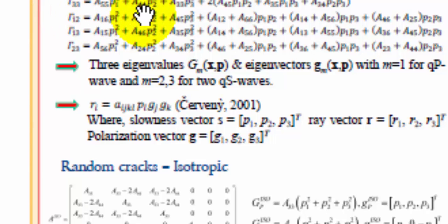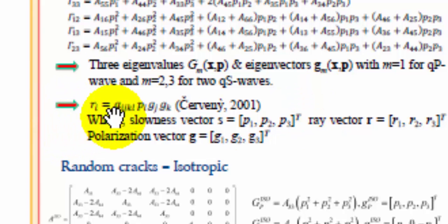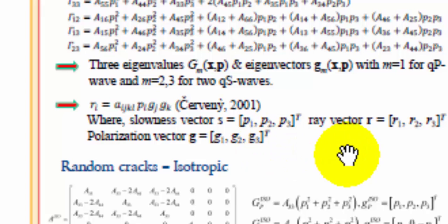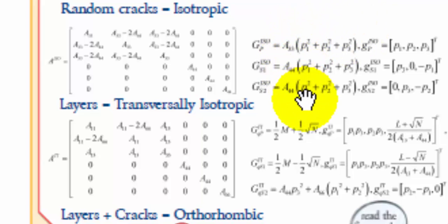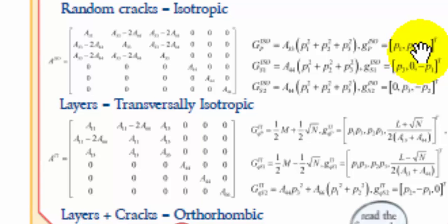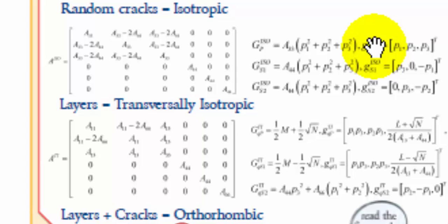The Christoffel matrix has three eigenvalues and eigenvectors corresponding to P wave and the two shear waves. This equation establishes the relationship between the ray vector, the slowness vector, and the polarization — so as long as we know one, we can calculate the other two. If the media is isotropic, the Eikonal equation, which is the square root of the eigenvalue equals one, is simple and the same for both P wave and shear wave. The only difference is that for P you use P wave velocity and for shear wave you use shear wave velocity. The P wave polarization is in the same direction as the ray and the slowness. Shear wave is coupled, not splitted, and the shear wave polarization is orthogonal to the P wave polarization.